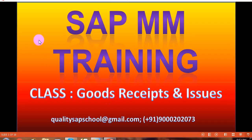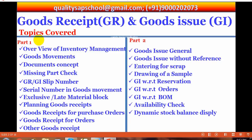Hi, welcome to SAP MM training class. In this session we are going to discuss goods receipts and goods issues. The topics we are going to cover include: overview of inventory management, goods movement documents concept, missing part check, GR/GI slip numbers, serial numbers in goods movement, exclusive late materials, block planning, and goods receipts — including goods receipts for purchase orders, goods receipts for orders, and other goods receipts.